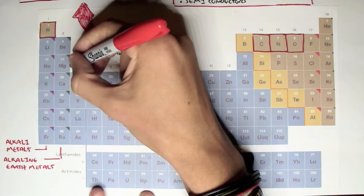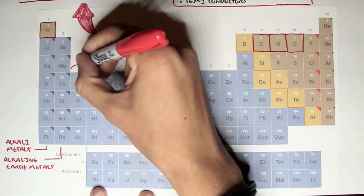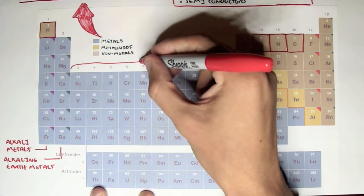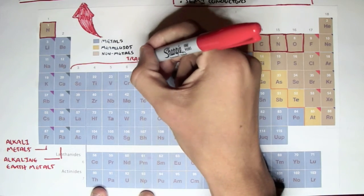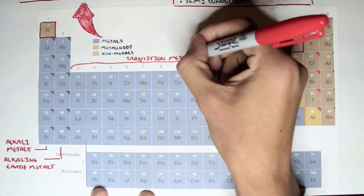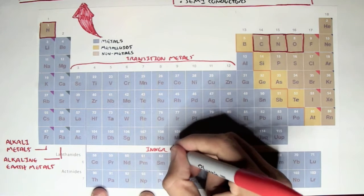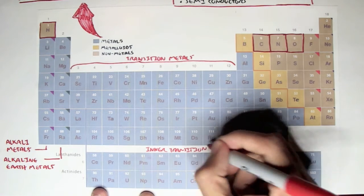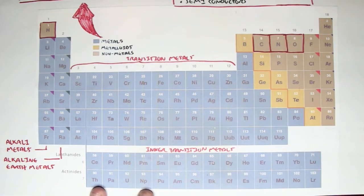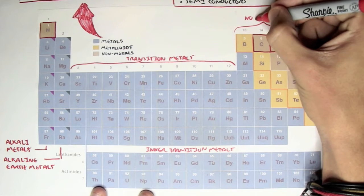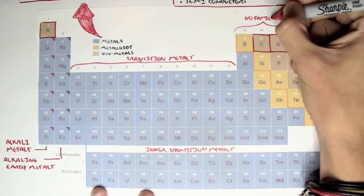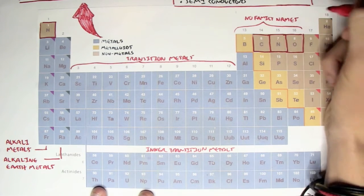These middle metals in this section, predominantly the group B from 1 to 8B, they're known as the transition metals. These down the bottom, the lanthanides and the actinides, are known as the inner transition metals. These four vertical rows, which is the 3A, 4A, 5A, and 6A, all these four, they actually have no particular family name, but each vertical row, the family, they share similar characteristics.